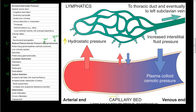Here we have a capillary bed, where the arterial side becomes very leaky so that nutrients can get out into the tissues for cells to consume glucose and other nutrients. The byproducts of cellular metabolism — the waste products — can be absorbed into the venous end and shipped to the heart, then filtered by the kidneys. On the arterial side we have high pressure.